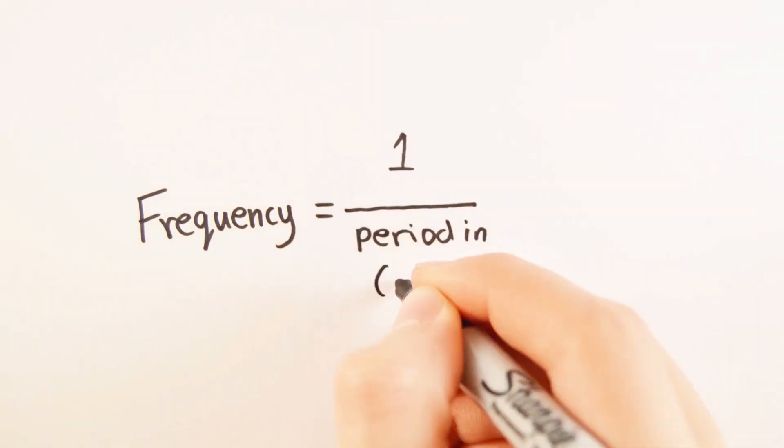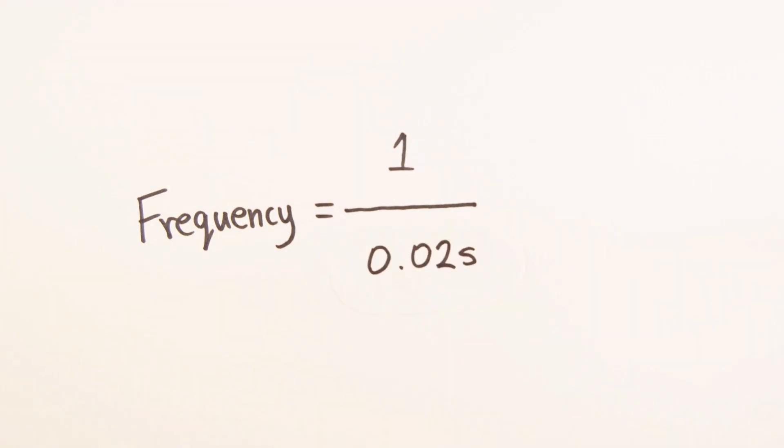To work out the frequency, you divide 1 by the period in seconds. So in this case, it will be 1 over 0.02 seconds, which is 50 Hz.